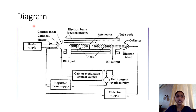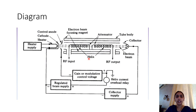This is a detailed diagram of a helix traveling wave tube where all supply voltages are shown — heater supply, regulated beam supply, and collector supply. The working of this helix traveling wave tube can be explained by a simplified diagram shown in the next slide.